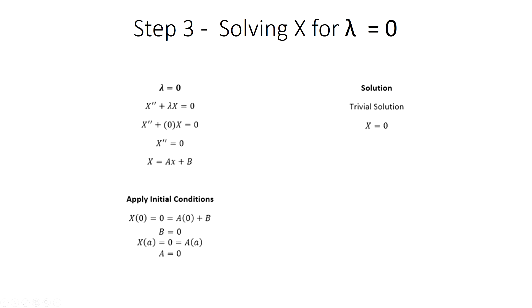The first value that we are going to use for our separation constant is zero. Plugging in zero for lambda allows us to do some simple integration to come to the conclusion that our function is of the form x equals ax plus b. At this point, we can use our initial conditions to determine what our constants are. Plugging in all known values from our boundary conditions leads us to realize that the solution associated with this equation is the trivial case where x equals zero. As such, we exclude both the eigenvalue and eigenfunction for lambda equals zero.